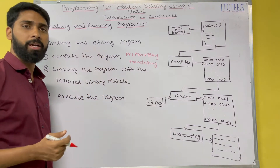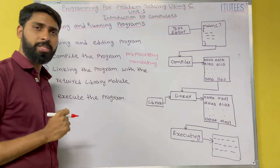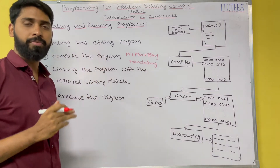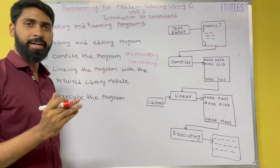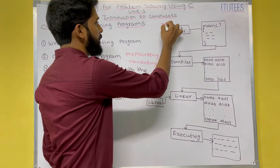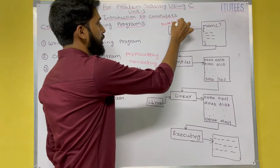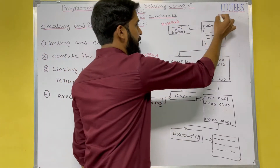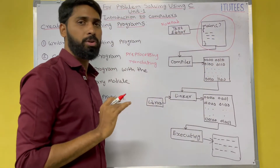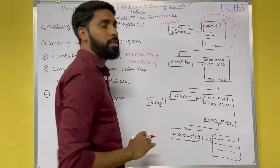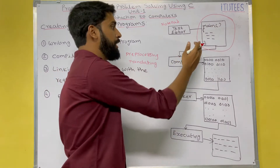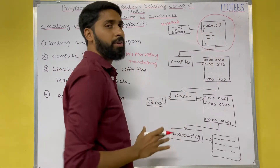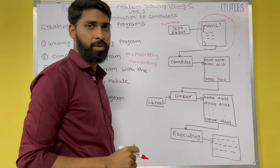So what is the process we follow when we write and execute a program? The first step is writing and editing the program. For that we need a text editor — for example, Notepad is a text editor. Open Notepad and in it you are going to write the program. Don't worry about main, brackets, and all those things — we will discuss those in detail in further classes.